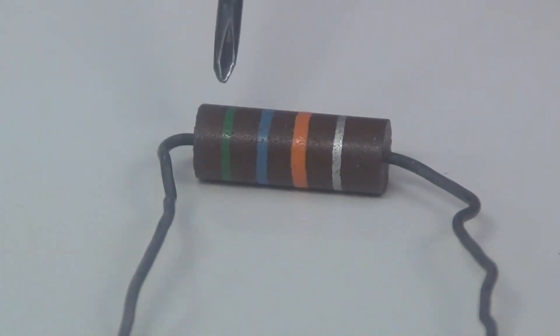This is another 4 color band, and the green represents a 5, the blue is a 6, and orange is 3 zeros, so you have a 56,000 ohm resistor with 10% tolerance.